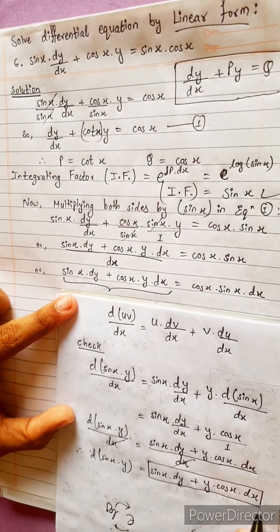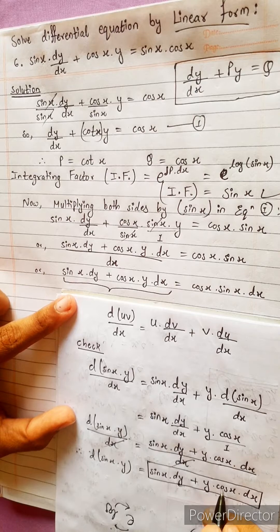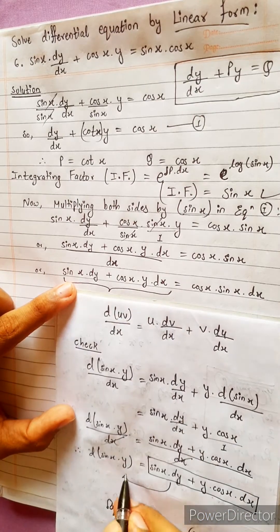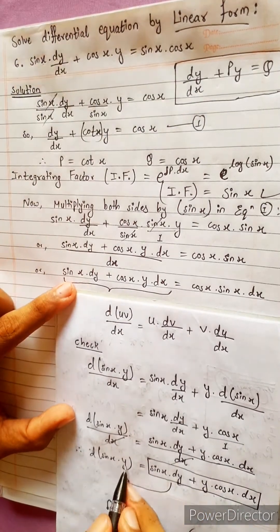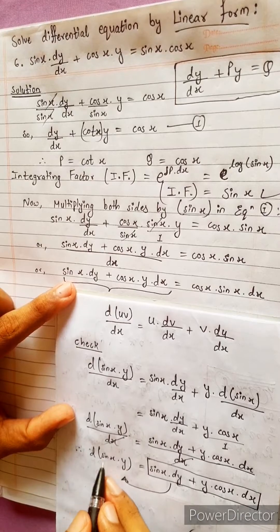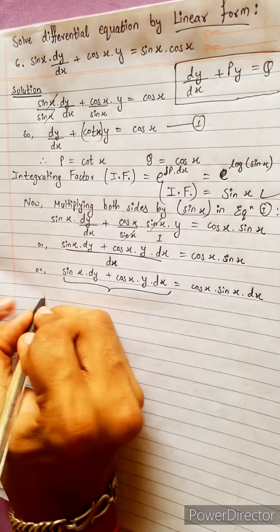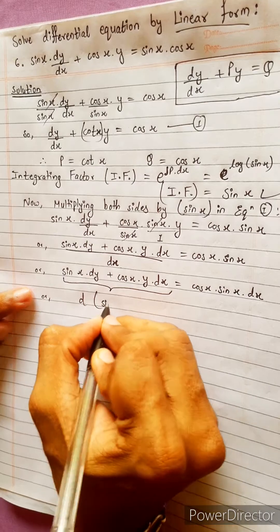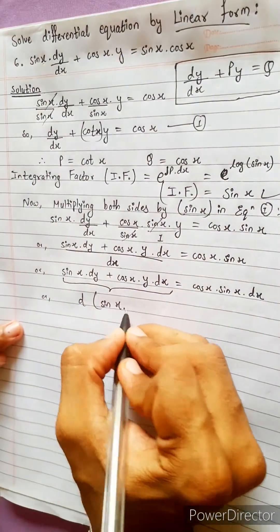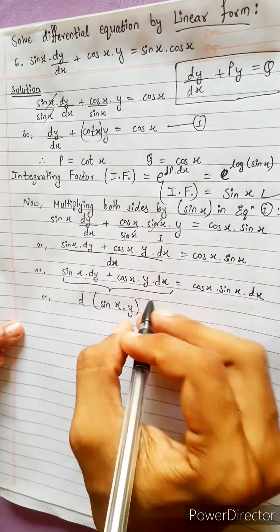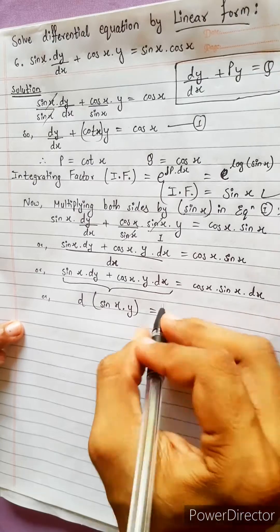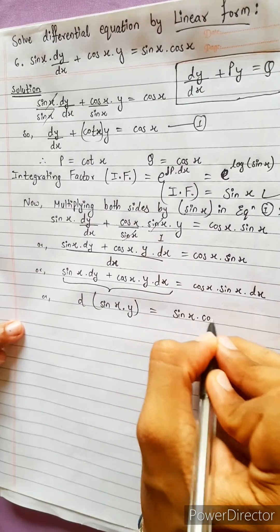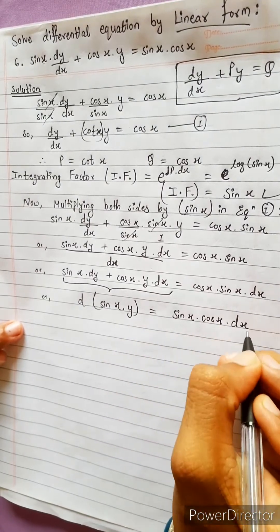We will replace this. We replace sin x·dy plus y·cos x·dx with d(sin x · y). So d(sin x · y) equals sin x·cos x·dx.